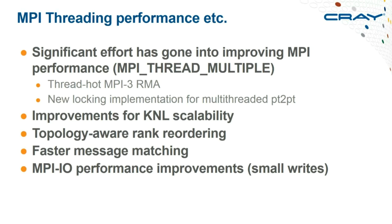A combination of MPI and performance tools now allows creating a rank reordering list based on your specific placement in the machine — though this requires running with the same placement. An existing feature looks at the application's communication pattern and generates a rank reordering list passed to MPI via an environment variable or file; the new feature adds topology awareness. MPIO also has improvements for small writes — it does aggregation of small writes and that logic has been improved.